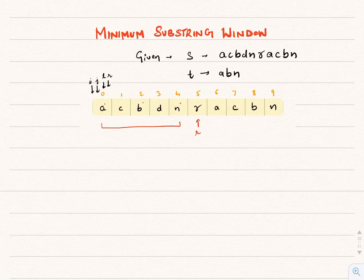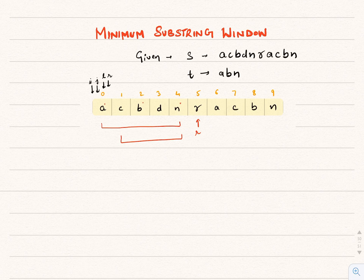After finding this window, we'll see whether we can shrink it from the left side and still have all pattern characters. If we shrink, the window starts from index 1 to index 4. But now the window has only B and N — not A.